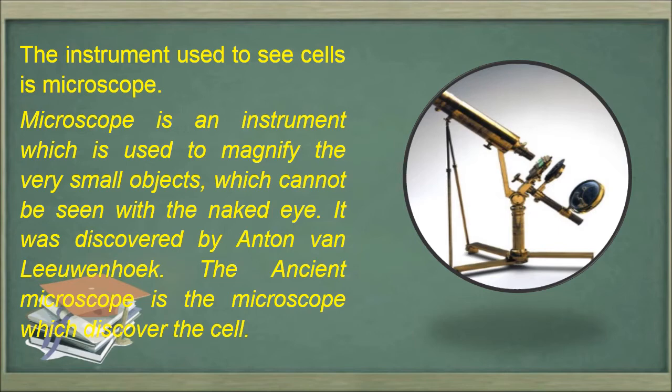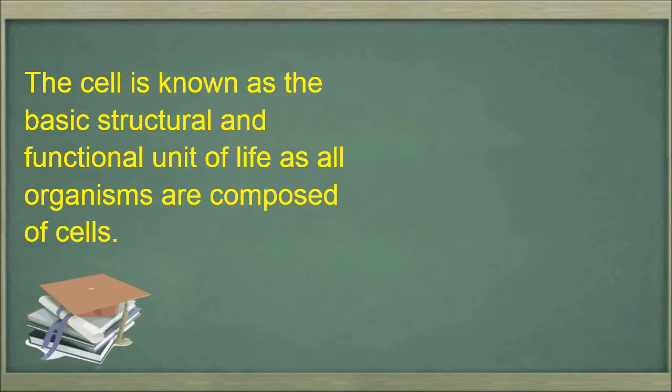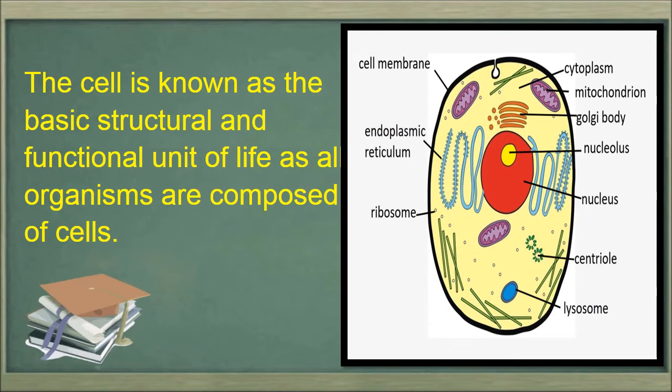Now let's study what is a cell. The cell is known as the basic structural and functional unit of life. All organisms are composed of cells. Just as houses are made up of a repeating unit like a brick, similarly living organisms — whether plant or animal — are made up of a repeating unit which we call a cell.